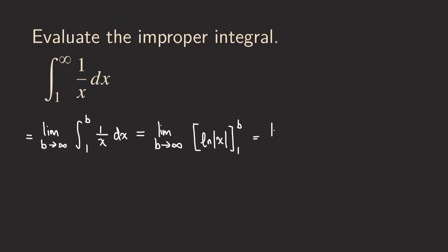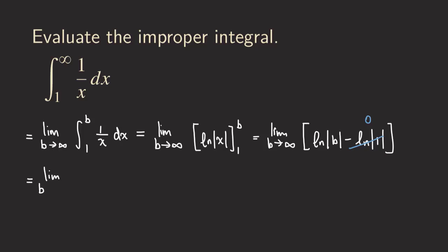Using the fundamental theorem of calculus, we plug b into x and plug 1 into x, then subtract. So we have ln|b| minus ln|1|. Since ln(1) is 0, we only need to find the limit of ln|b|. As b approaches infinity, ln(b) also approaches infinity.